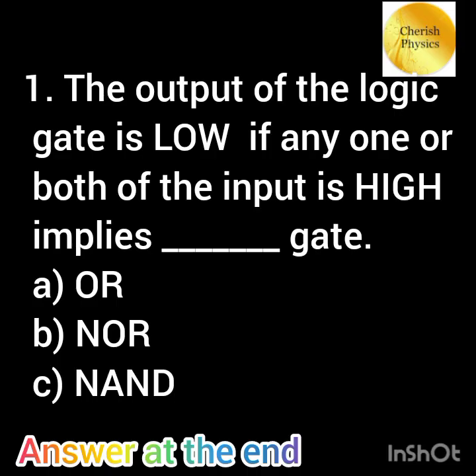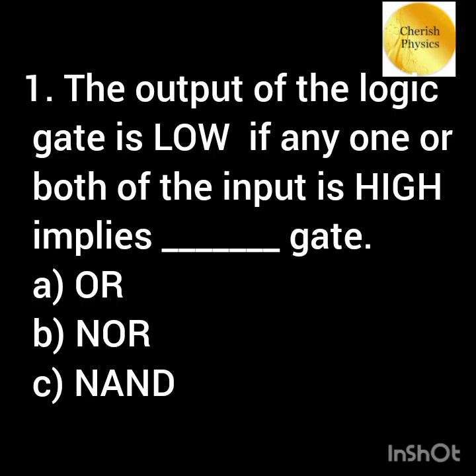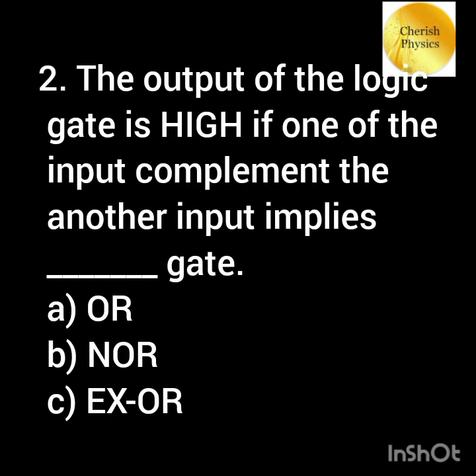The output of the logic gate is low if any one or both of the inputs is high — implies dash gate. The output of the logic gate is high if one of the inputs complements the other input — implies dash gate.